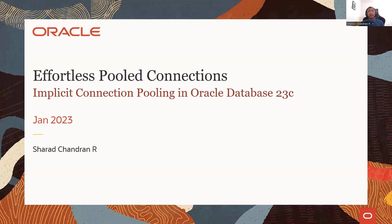In this session, I'll give a quick overview of what DRCP is, since we are going to talk about implicit connection pooling with DRCP, but I assume most of you will be aware of this feature. If not, please do check out the YouTube video talk we gave at Oracle Cloud World 2022 on DRCP — the link will be available in the last slide. Then I'll talk about the implicit pooling feature introduced for DRCP in 23C, and finally round it off with benefits and where else implicit pooling has been implemented.